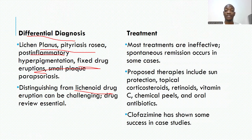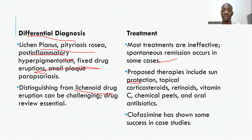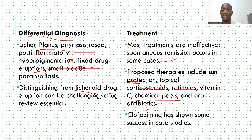For treatment, most therapies are very ineffective and may serve no purpose. Proposed therapies include sun protection, since sun exposure can worsen pigmentary disorders. We can also use topical corticosteroids, retinoids, vitamin C, chemical peels, and oral antibiotics to try to help. Clofazimine has been shown to be successful in a few case studies and anecdotal data, but these are not yet confirmed.